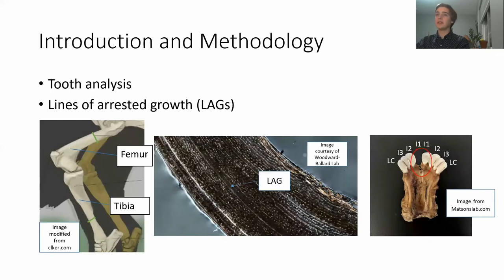Typically, scientists will sample a tooth to determine the age of an elk, but I wanted to see if certain bones could be used to accomplish this goal. To do this, I counted the number of lines of arrested growth present in different bones. Lines of arrested growth are rings that form in a growing bone similar to the way tree rings are formed.